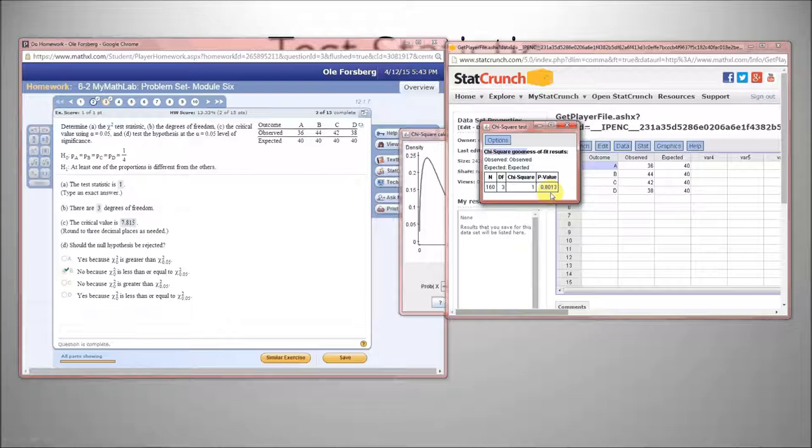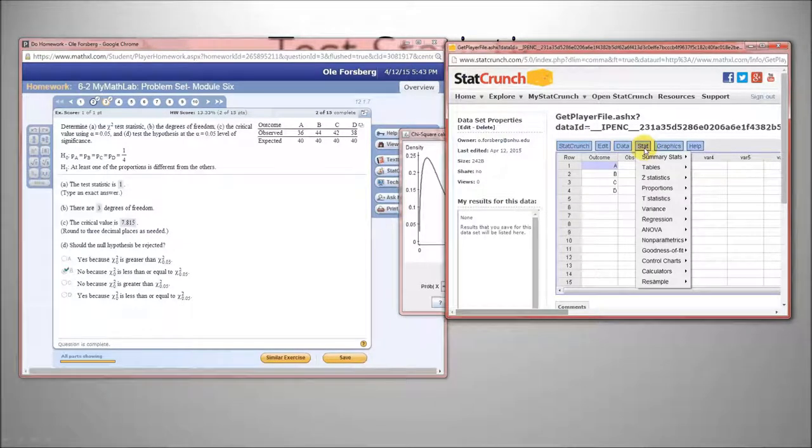So, while StatCrunch is good for calculating p-values, if you need to use the other method, like to calculate the critical value as in this problem, you'll have to actually go through and do all the calculations by hand. Hopefully this was helpful. Take care of yourselves. Bye.